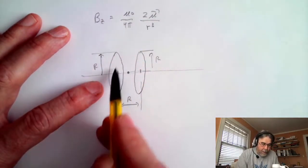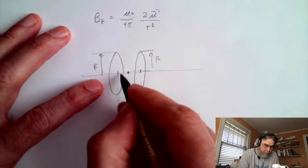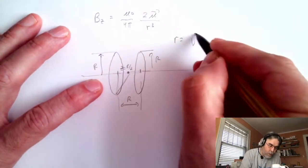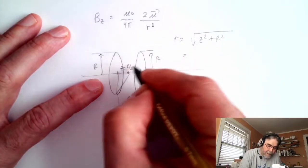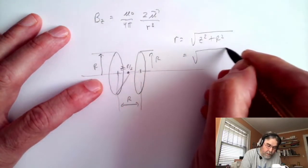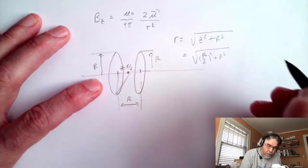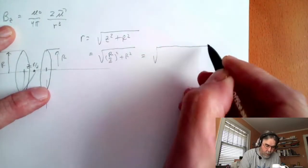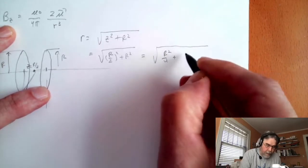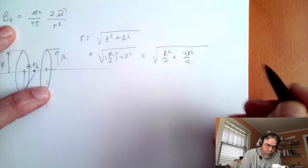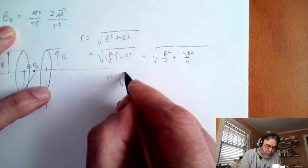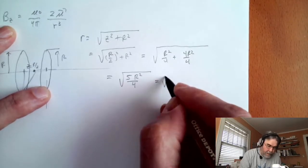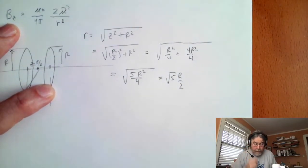Let's use this expression to figure out the magnetic field from one loop of wire. Z is just going to be R over 2, since I'm halfway between the two coils. So little r is going to be the square root of Z squared plus R squared, which is the square root of (R/2)² plus R² — that's the square root of R²/4 plus 4R²/4 — which simplifies to the square root of 5R²/4, or the square root of 5 times R over 2.